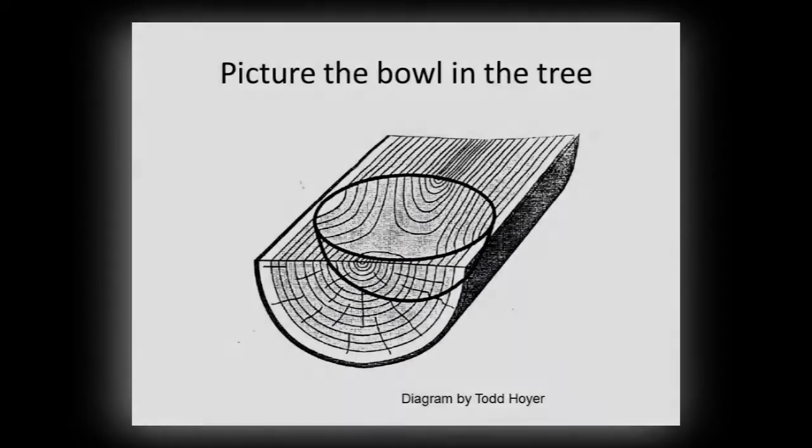So now the next thing you need to do is lay out how that bowl is going to be in the wood. And it's important because the grain direction makes a difference in how the bowl looks and its functionality.